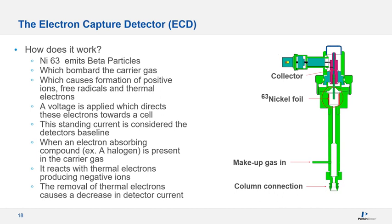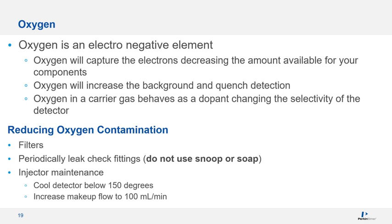One of the factors affecting the ECD detector is the carrier gas. The detector gas should be ultra-clean and dry, because oxygen and water are electronegative and contribute to a noisy baseline and reduction in sensitivity. To reduce oxygen contamination, solutions include changing the filter, checking fittings for leaks, and performing injector maintenance. Fluctuations in carrier gas flow will also cause interruptions in response and baseline stability. We recommend a makeup gas flow of 30 mL/min for operation and 100 mL/min for baking.